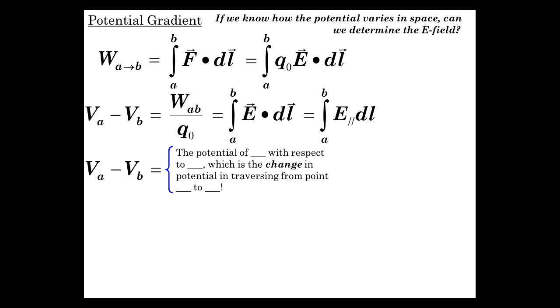So V_A minus V_B is the potential of A with respect to B. Now, the potential of A with respect to B is how the potential changes in going from B to A. That should make sense, because if we go from B to A, then final is A, initial is B, A minus B, right? So that's the change in going from B to A.